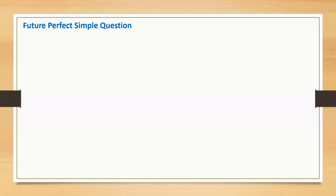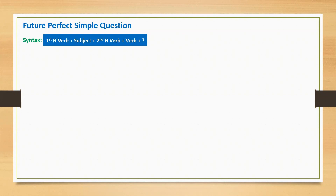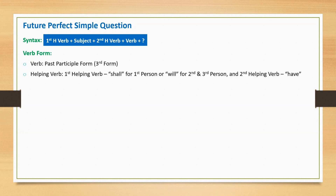Future perfect simple question is an interrogative statement, also known as a yes/no question, as we expect an answer of either yes or no. The syntax begins with the first helping verb, followed by the subject, second helping verb, main verb in past participle form, and a question mark at the end. The first helping verb is 'shall' for first person, and 'will' for second and third person. The second helping verb 'have' is used for all persons.